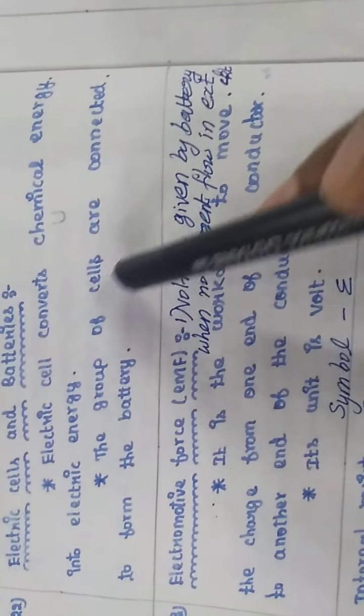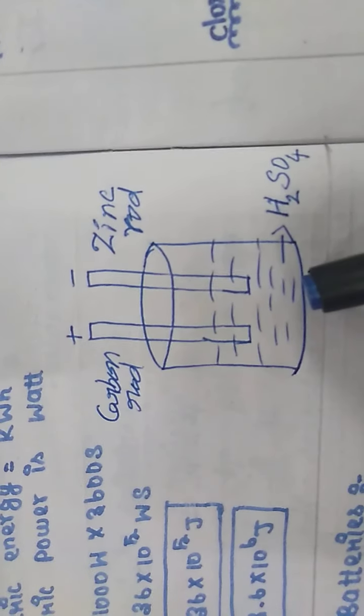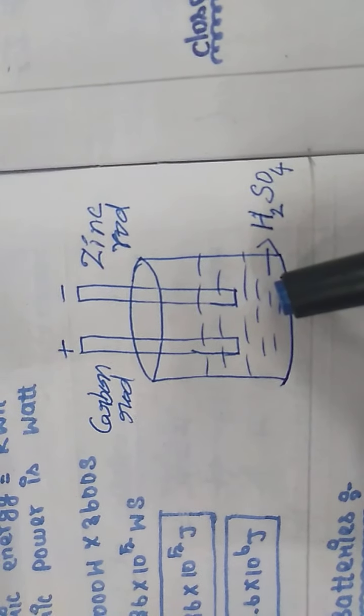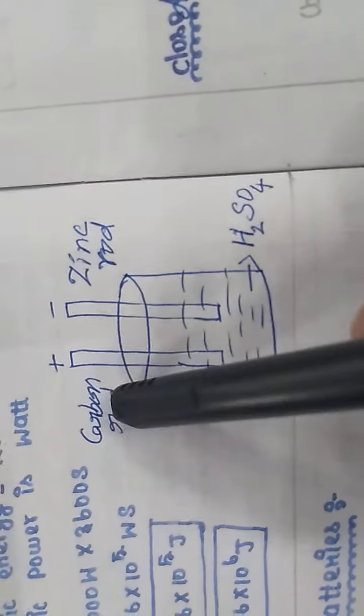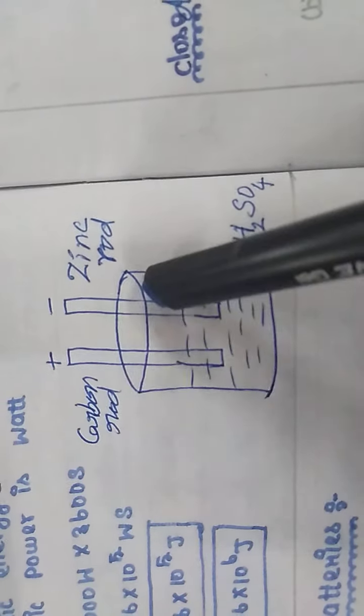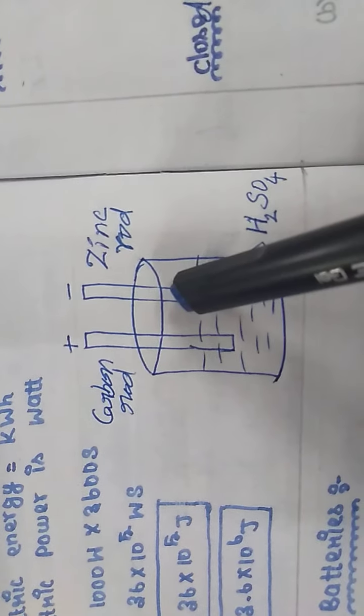A group of cells connected together forms a battery. Now let's look at a diagram of a simple electric cell. We take a glass vessel filled with H₂SO₄, and in the H₂SO₄ two rods are immersed — one is a carbon rod and the other is a zinc rod.